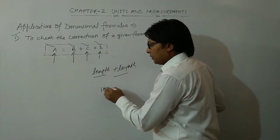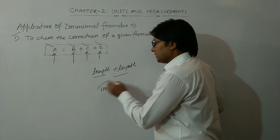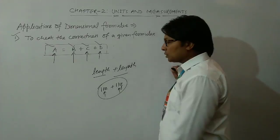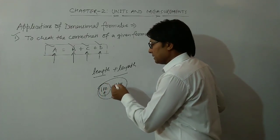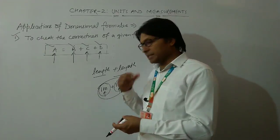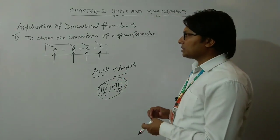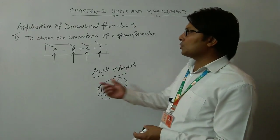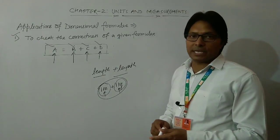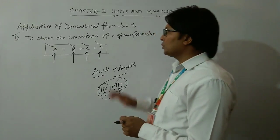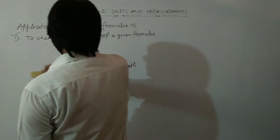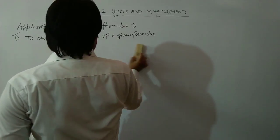For example, if someone says add 1 meter to 1 kg, we cannot, because one represents length and the other represents mass. This is the principle of homogeneity: similar types of physical quantities can be added. If we are adding or subtracting physical quantities, their dimensional formulas must be the same. The first application is based upon this principle of homogeneity.